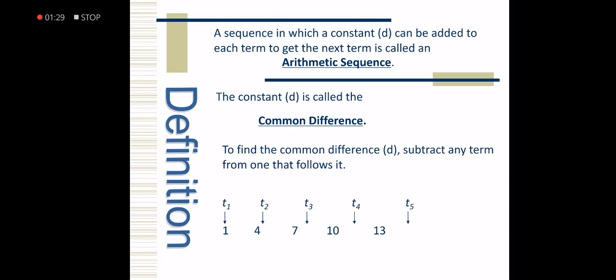To determine the common difference, we need to subtract two consecutive terms in the sequence. For example, 4 minus 1 is 3. The next terms: 7 minus 4 is 3. Then 10 minus 7 is 3. So the common difference is 3.